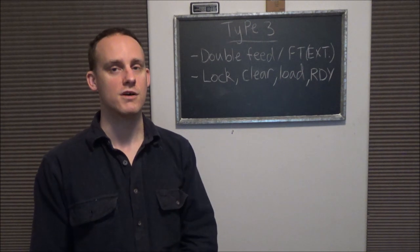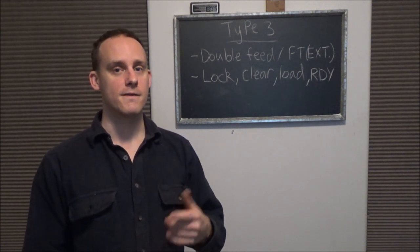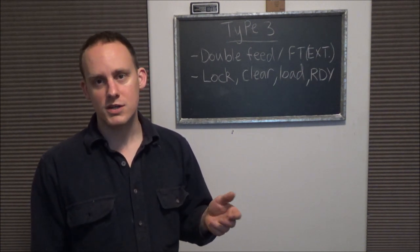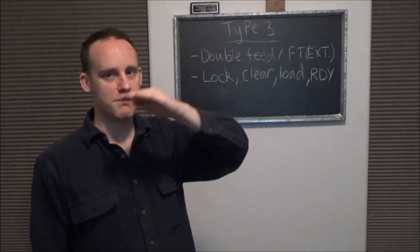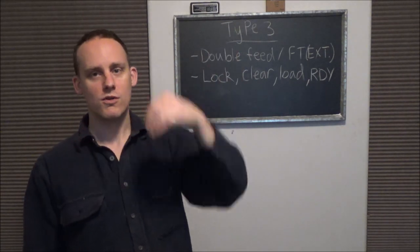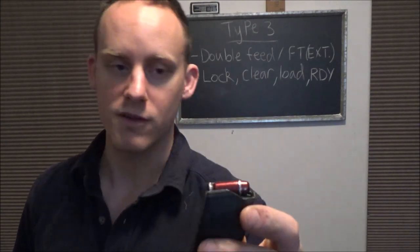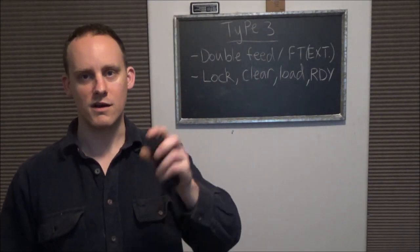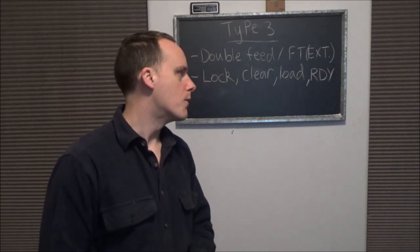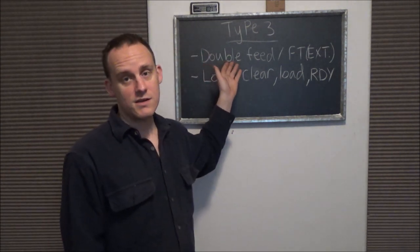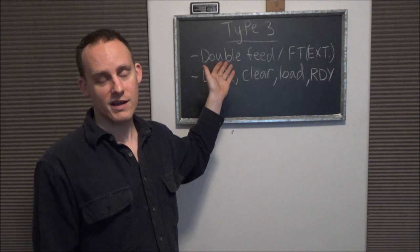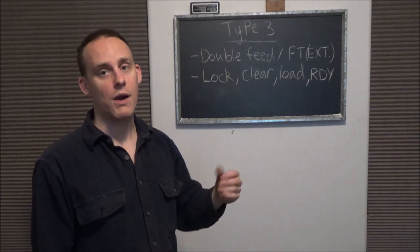I had this issue with the ETS Glock mags and it was a spring tension issue where it was bouncing the round out and the angle of the feed lips was causing them to get pushed out under their own tension. That's something that can happen and we'll talk about how to set it up in more detail.